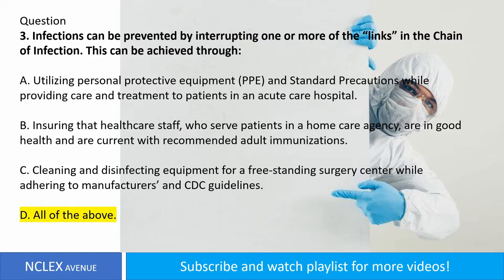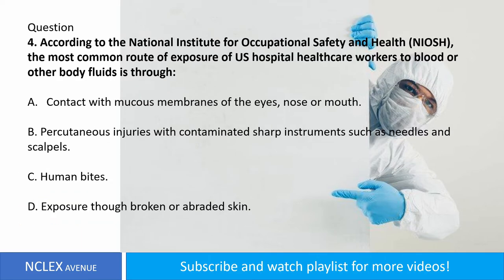Question number four. According to the National Institute for Occupational Safety and Health (NIOSH), the most common route of exposure of U.S. hospital healthcare workers to blood or other body fluids is through: A. Contact with mucous membranes of the eyes, nose or mouth. B. Percutaneous injuries with contaminated sharp instruments, such as needles and scalpels. C. Human bites. D. Exposure through broken or abraded skin. Answer: letter B.